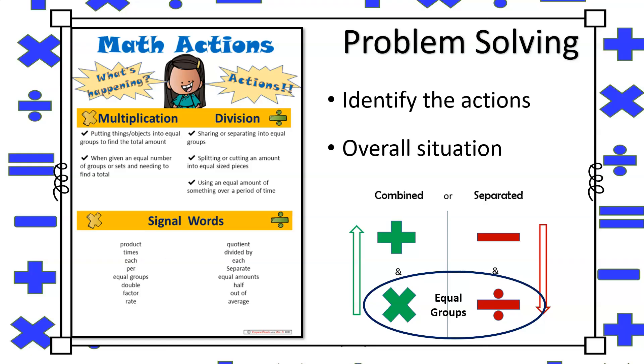multiplication requires you to find the total, where equal amounts will be combined, whereas with division, you're given a total and it is being separated into equal groups.